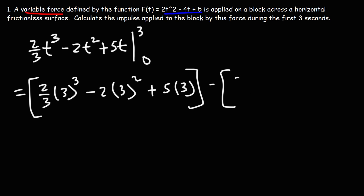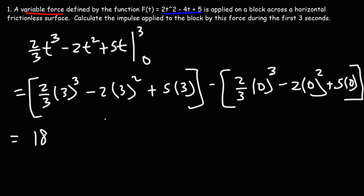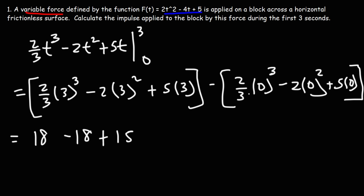Then we subtract the expression evaluated at 0. Since multiplying by 0 gives 0, all three terms at t=0 are 0. Computing at t=3: 3³ is 27, divided by 3 is 9, times 2 is 18. Then 3² is 9 times 2 gives negative 18. And 5 times 3 is 15. The 18 and negative 18 cancel.